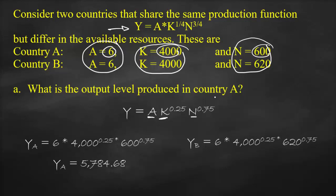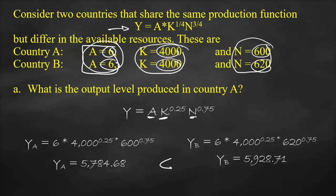For Country B, we substitute into the same production function: Y = 6 × 4000^0.25 × 620^0.75. This gives an output of 5,928.71. As you can see, the output of Country B is bigger than Country A because they have the same productivity and the same capital, but Country B has higher labor. If N increases in the production function, output will increase.